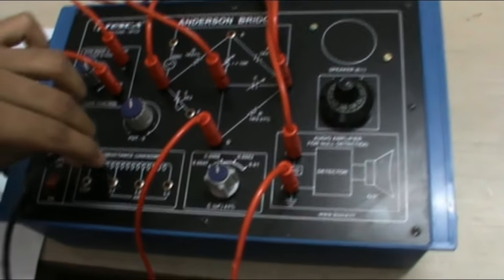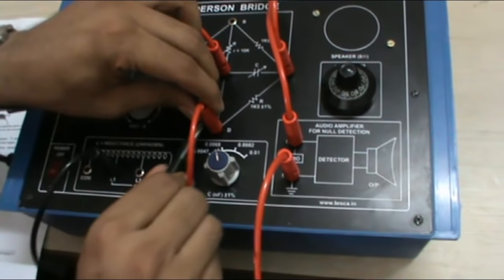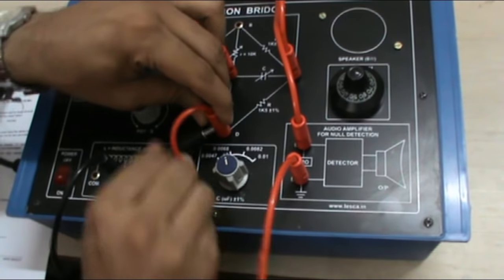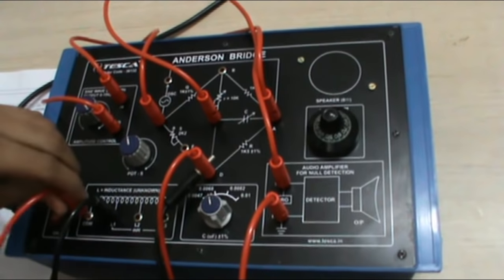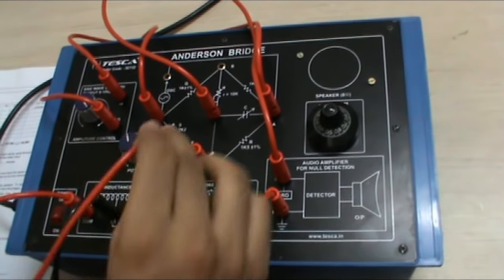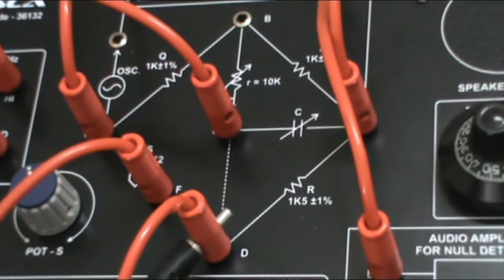Connect unknown inductance L. I take L1 this time. Connect it to D point of detector to F. Now these are the connections that we have to make.